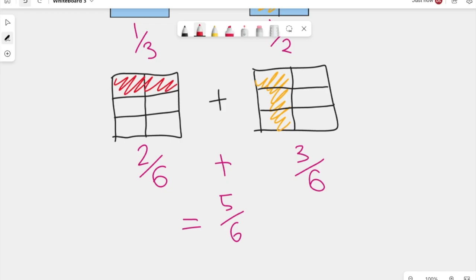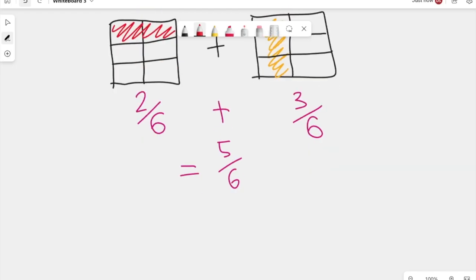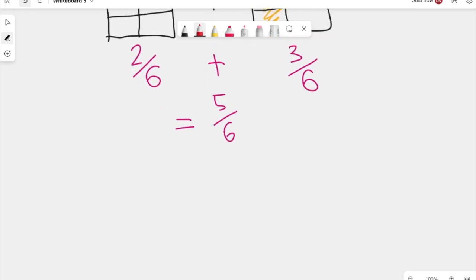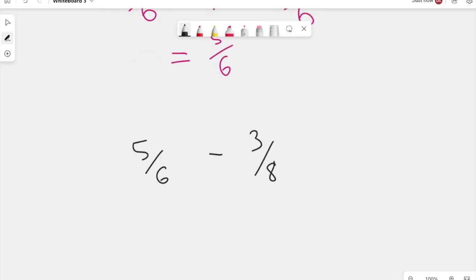So that's where we get this particular answer. I hope that all makes sense. I'm going to do one more example, but with subtracting fractions now, and this is going to be a bit of a trickier one. I'm going to draw two fraction squares. I want to be subtracting from five sixths, I want to subtract three eighths. This is our second example.